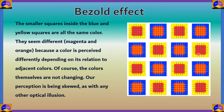If you look at this picture, the smaller squares inside the blue and yellow squares are all the same color — guaranteed. However, if you look at them closely, some of them look magenta while others look red or orange. They seem different because a color is perceived differently depending on its relation to adjacent colors. The different background each smaller square gets makes it feel different, even though both are exactly the same.